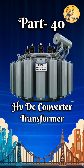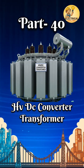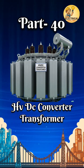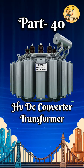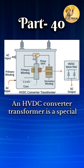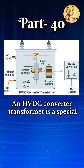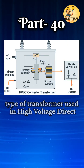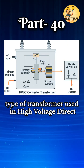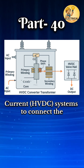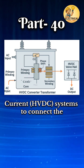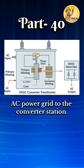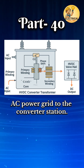In transformer types, series 40, number one is the HVDC converter transformer. An HVDC converter transformer is a special type of transformer used in high-voltage direct current (HVDC) systems to connect the AC power grid to the converter station.